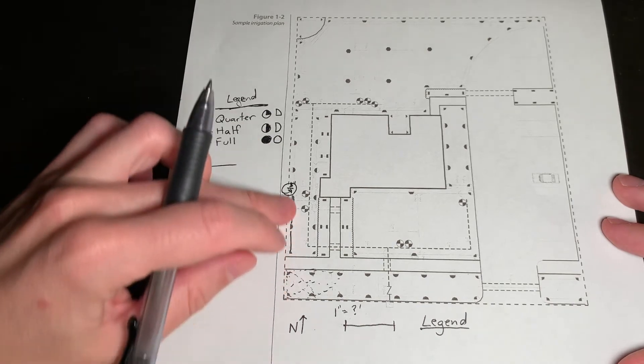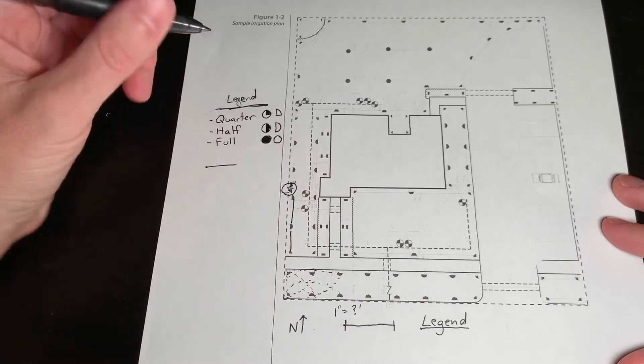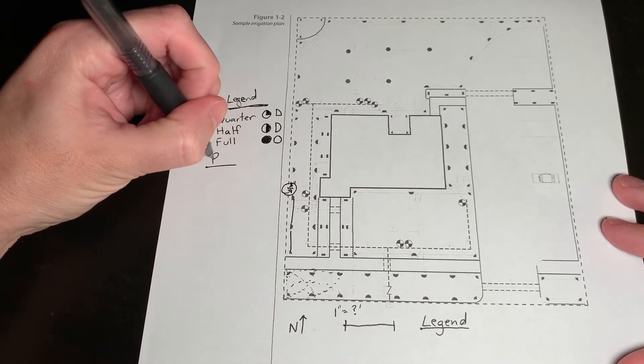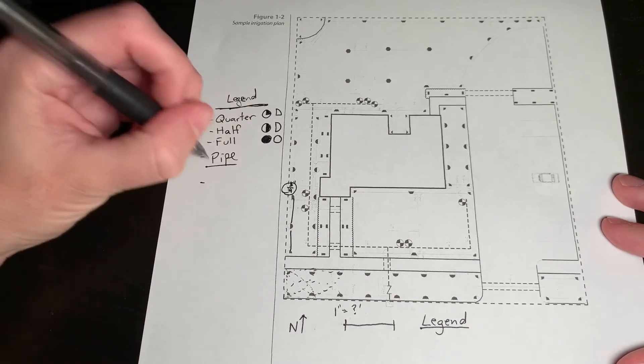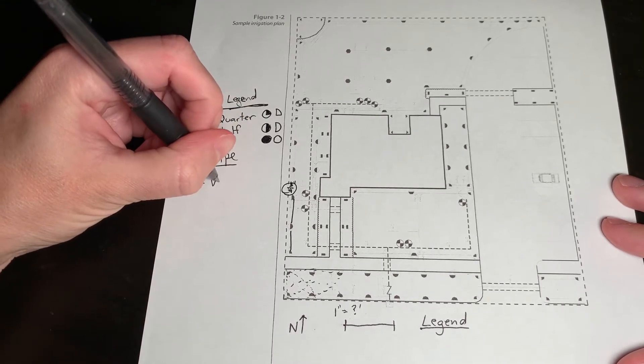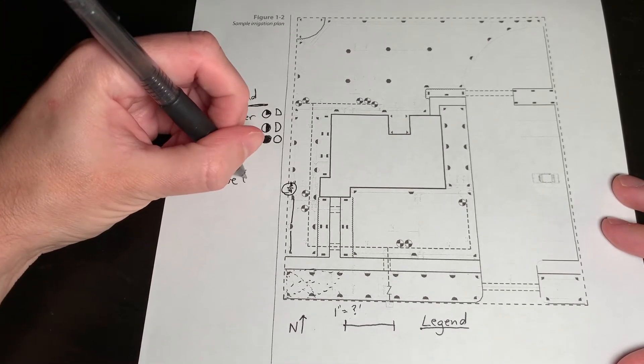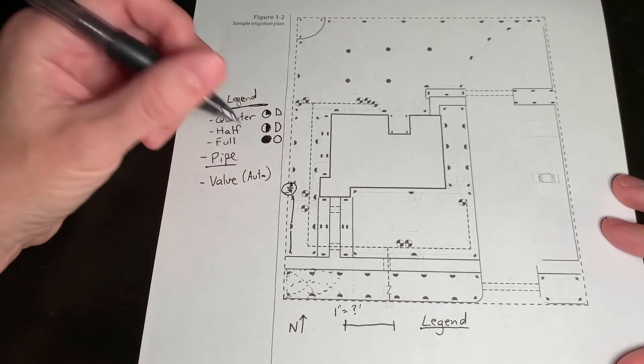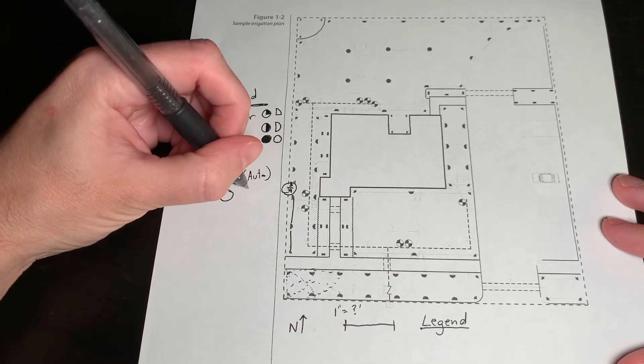So each of these sprinkler heads goes back to an automatic control valve. And I'll just put pipe and so the valve if it's electrical or automatic here, it's another octagon.